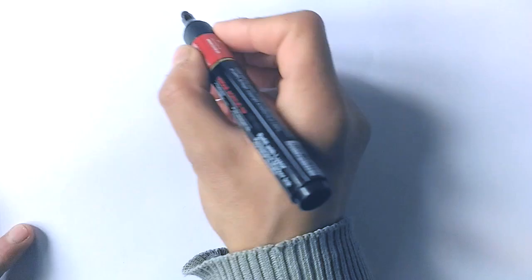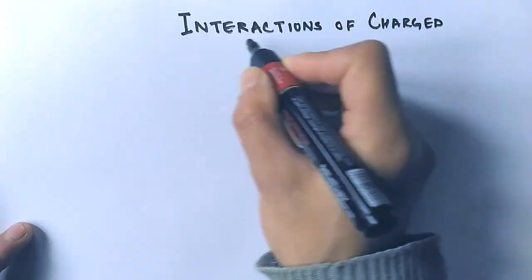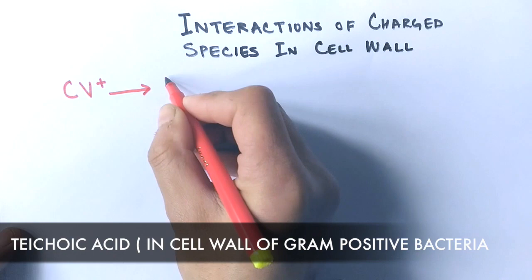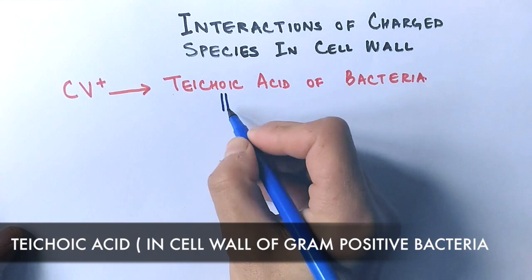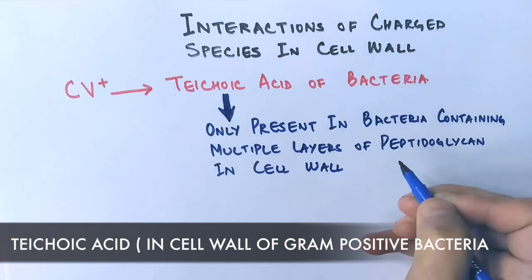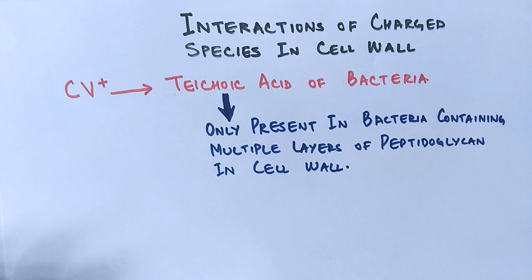After entering the cell wall, these charged species start interaction with the components of the cell wall. The CV positive part of the dye interacts with the teichoic acid of the cell wall. Teichoic acid, being a negatively charged molecule, attracts the CV positive. However, teichoic acid is only present in bacteria containing multiple layers of peptidoglycan — that is, Gram positive bacteria — while Gram negative bacteria, which have only a monolayer of peptidoglycan, do not contain teichoic acid.